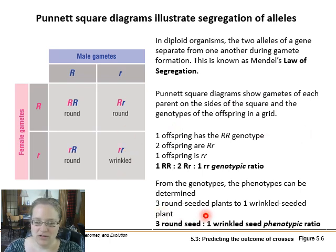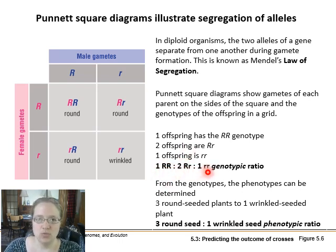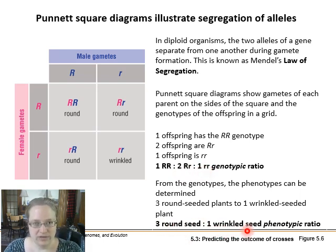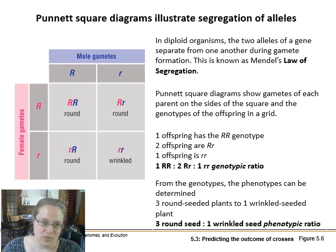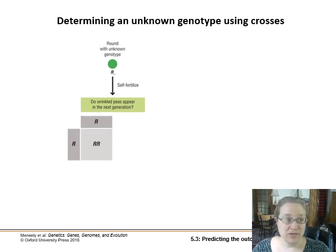That's how we get our three-to-one phenotype ratio. Notice we always write out what the ratio represents — it's one homozygous dominant to two heterozygotes to one homozygous recessive, and three round seeds to one wrinkled seed. Be very clear in how you report your results so there's no ambiguity. Sometimes we're doing a cross to find out what the genotype of the parents was, as opposed to focusing on the offspring.